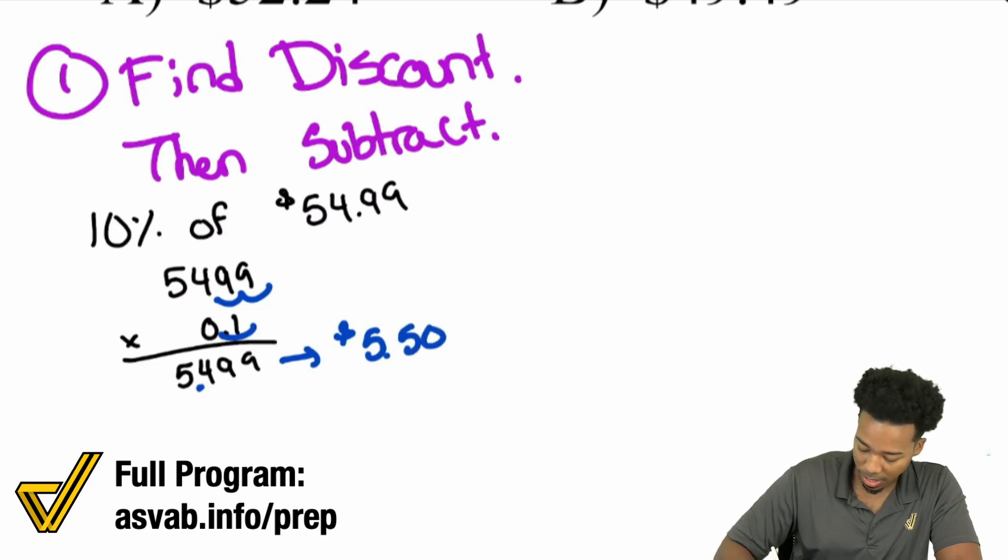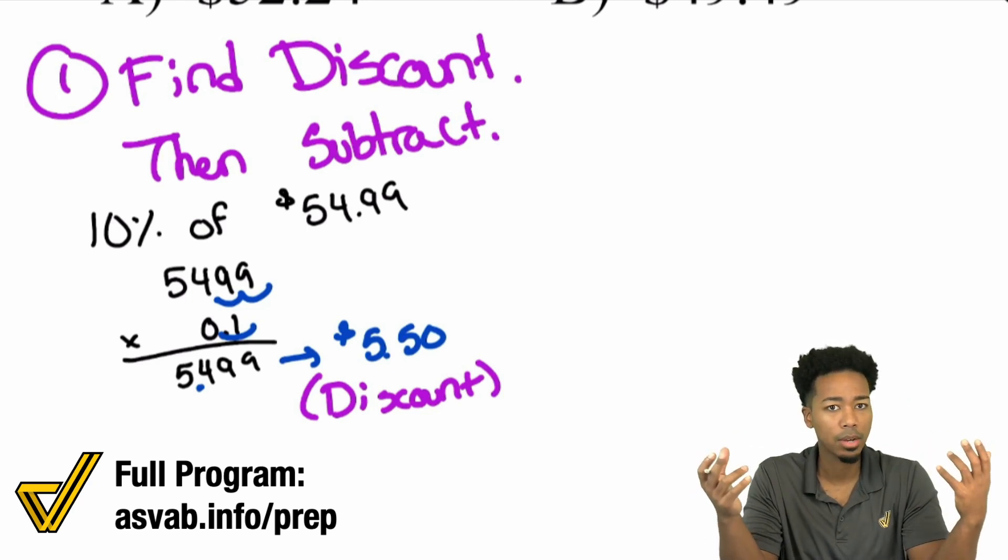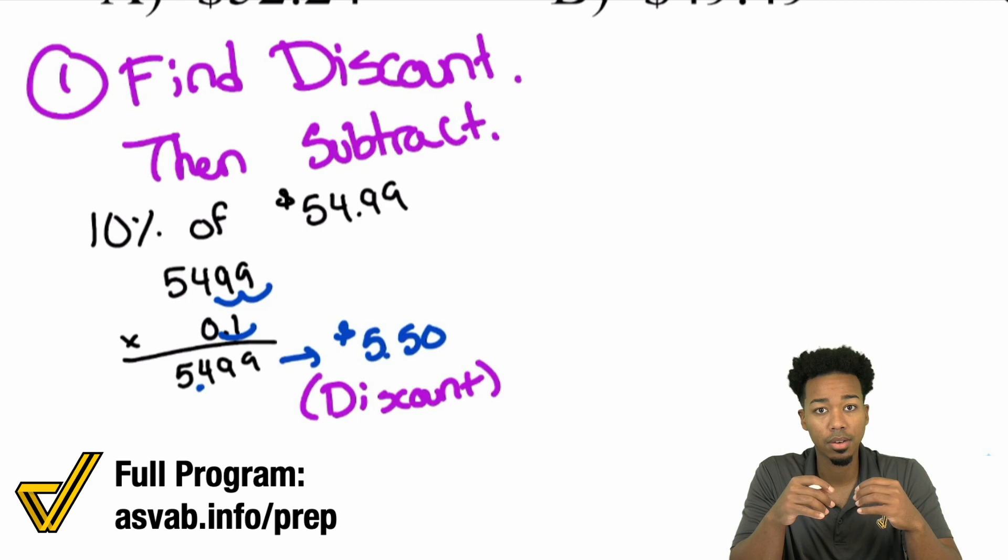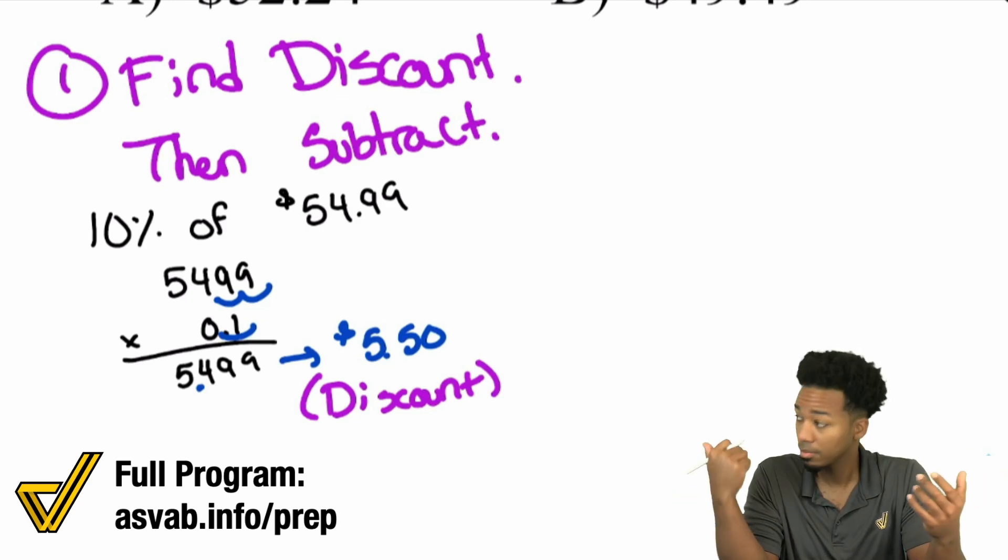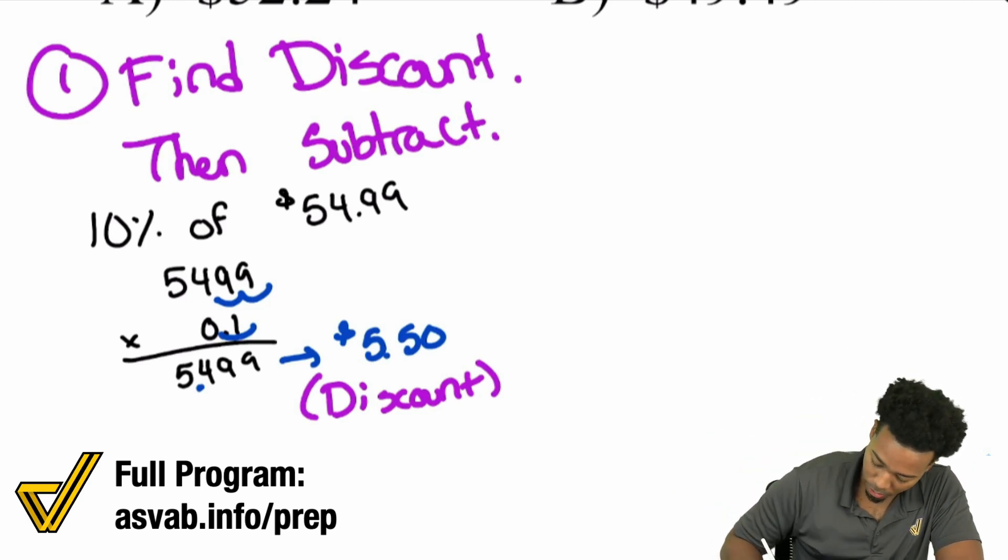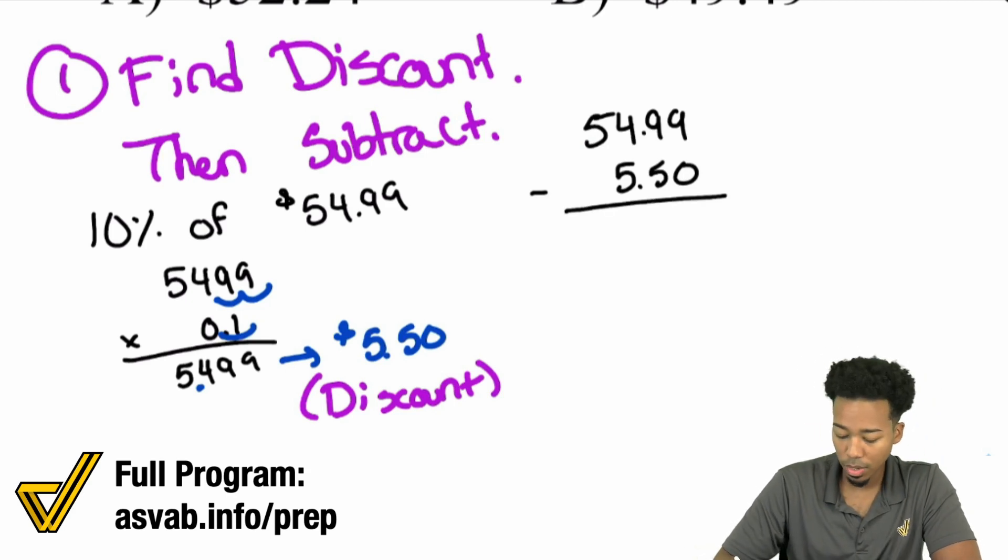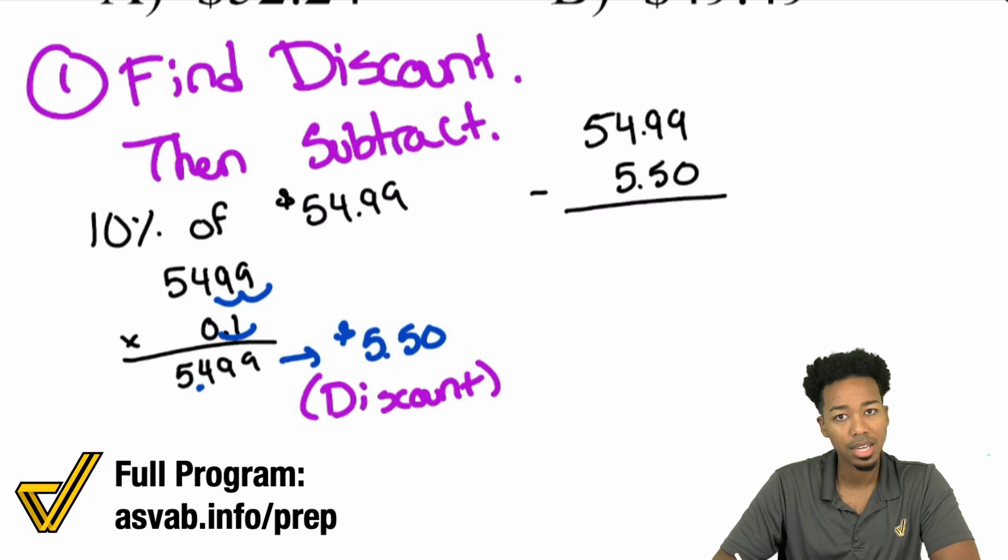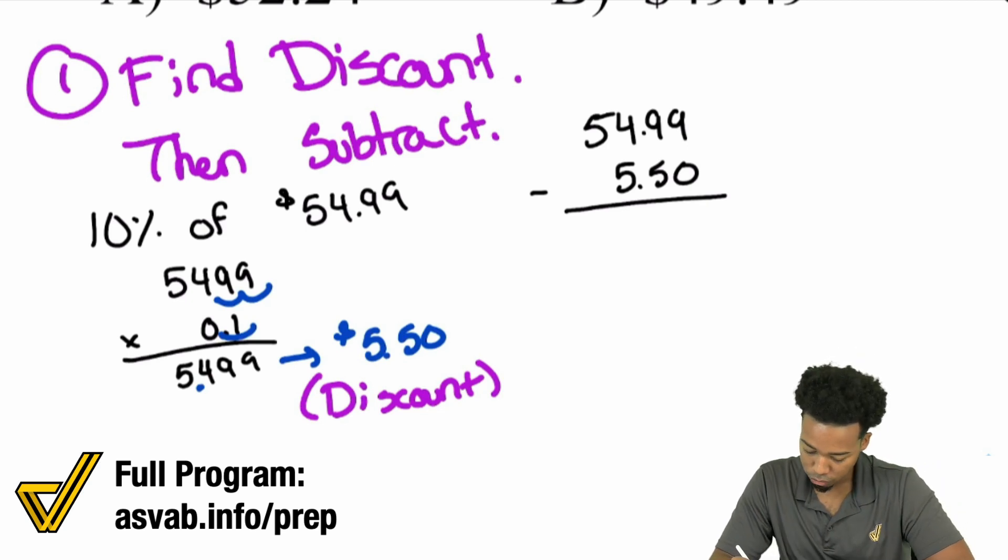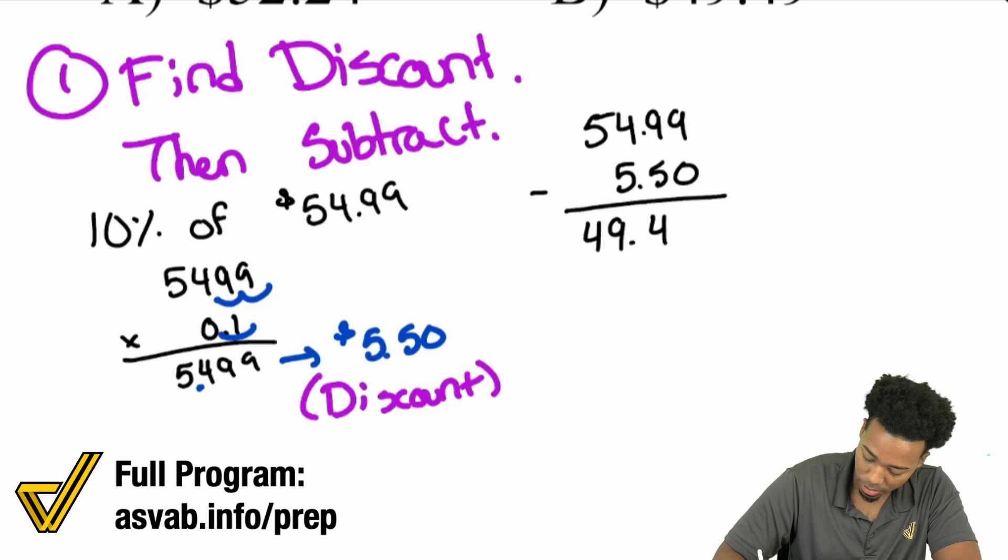This is your discount. What do you do with the discount? When you're at the store and they say 10% off, you're subtracting 10% from the final price. That $5.50 is your discount. We'll subtract that from the price of $54.99. Once we do that, we receive $49.49.